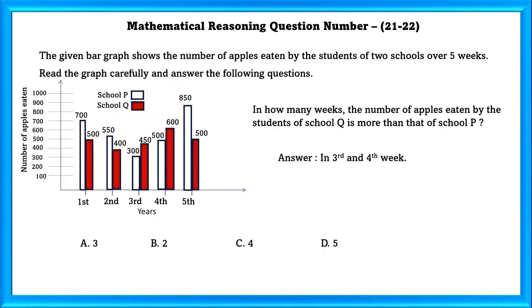Mathematical Reasoning Questions No. 21 and 22: The given bar graph shows the number of apples eaten by students of 2 schools over 5 weeks. In how many weeks is the number of apples eaten by students of school Q more than that of school P? From the graph, Q is more than P in the 3rd and 4th week, so the answer is 2 weeks.